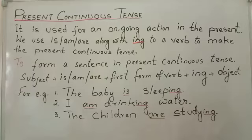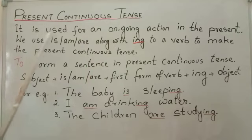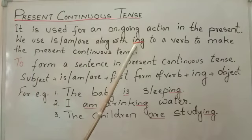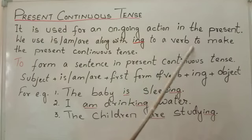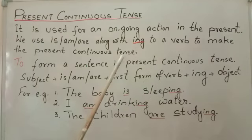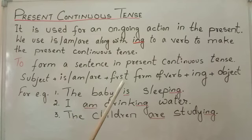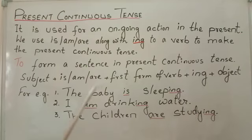Now, let us learn present continuous tense. It is used for an ongoing action in the present. We use is, am, or are along with ing added to a verb to make the present continuous tense. To form a sentence in present continuous tense, we need subject plus is or am or are plus first form of verb plus ing plus object.